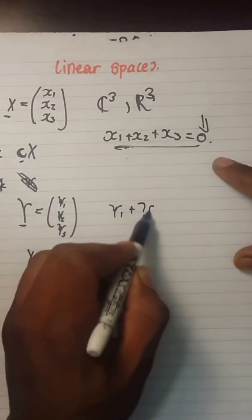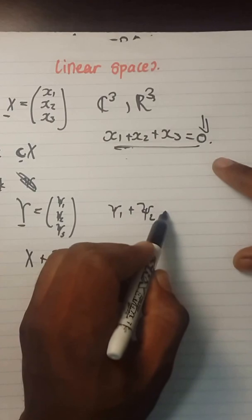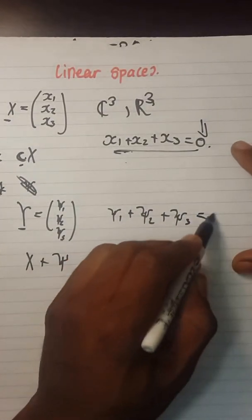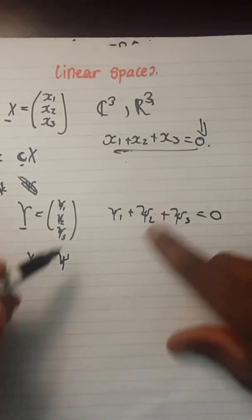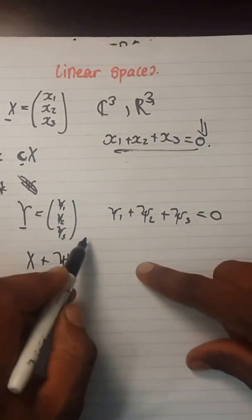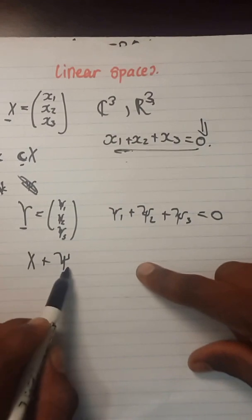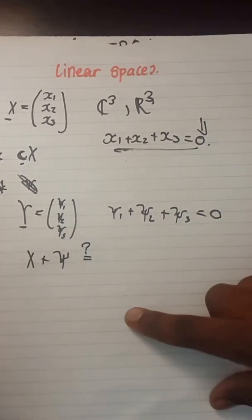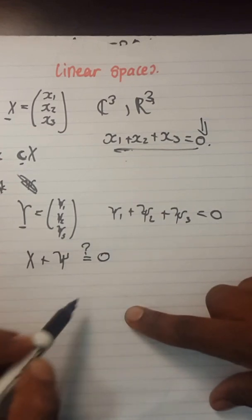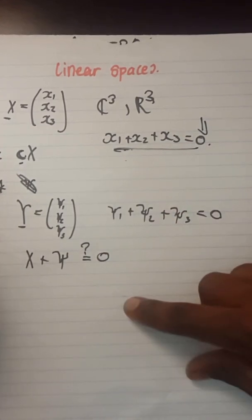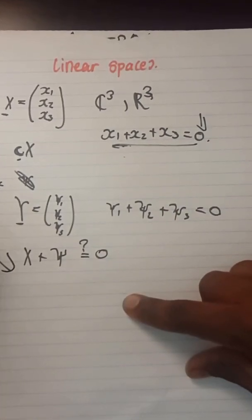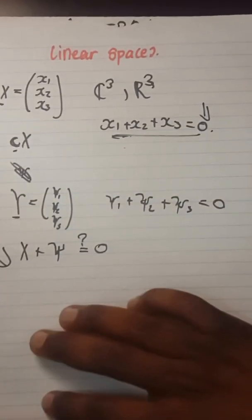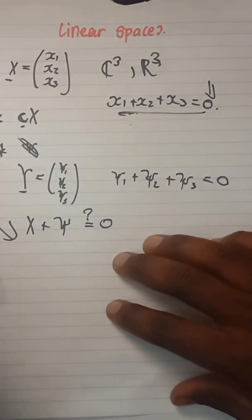We'll have Y1 plus Y2 plus Y3 equals zero. You need to add X plus Y and find out if you get zero. If these two cases are satisfied, then you have a linear space.